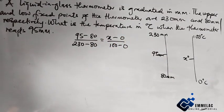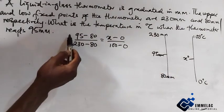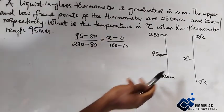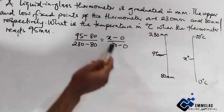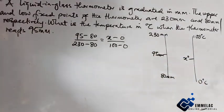So that's 95 minus 80 over 230 minus 80, which equals x minus 0 over 100 minus 0. This is called proportion.